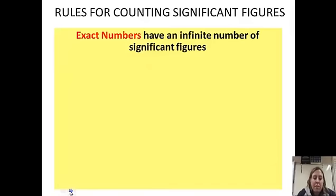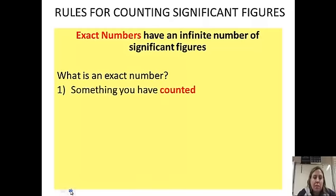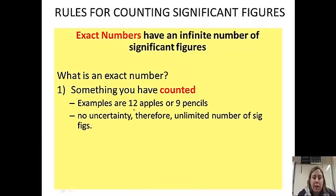Exact numbers are a different type of thing. They're not measured. So, an exact number is something that you have counted, like if you have 12 apples or 9 pencils, you count that. Because when we're counting, we're going like 1, 2, 3, 4, 5, there's no uncertainty because I haven't measured the number of apples. It's not dependent on the accuracy of a device. So, we have an unlimited number of significant figures because we have unlimited certainty. We know for sure.